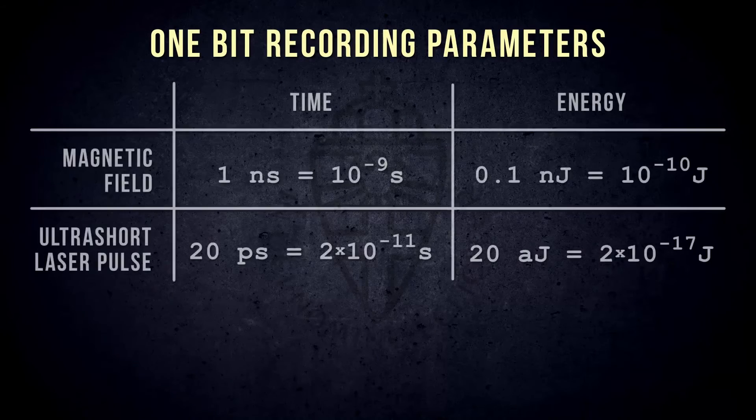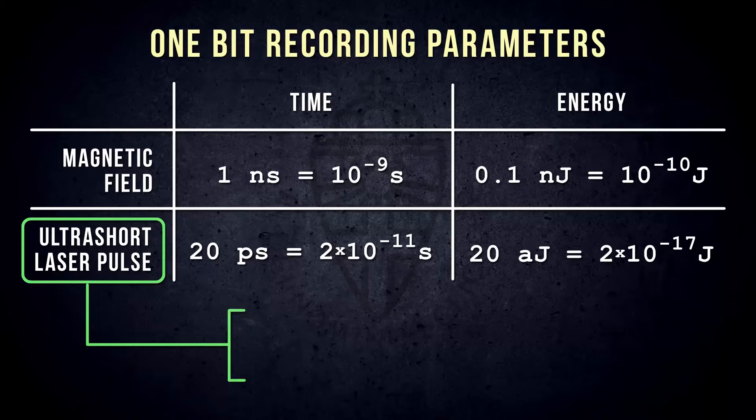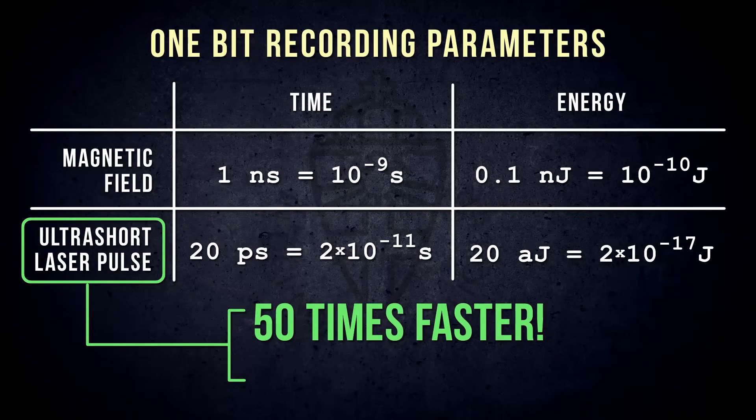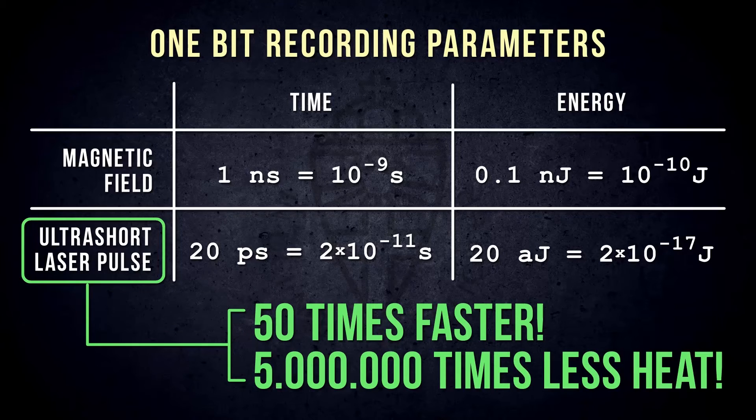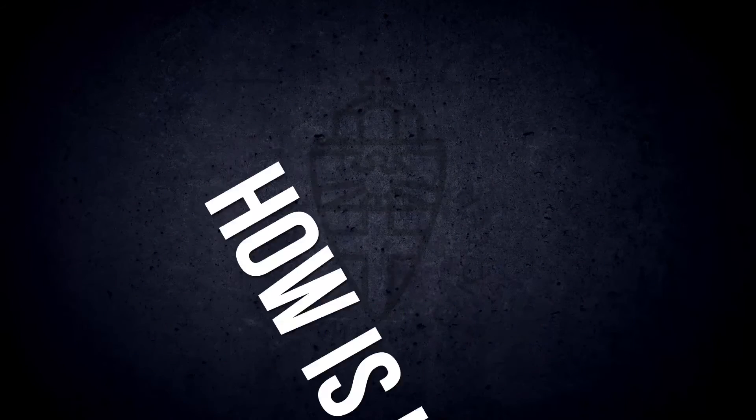In particular, we have shown that using an ultra-short laser pulse instead of an electromagnet, we can record information 50 times faster while dissipating 5 million times less energy per bit than in state-of-the-art hard disk drive. How is it possible?